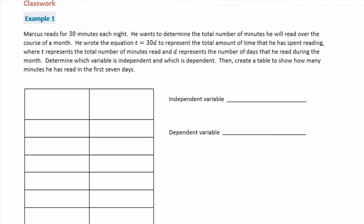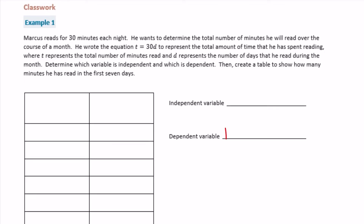First, let's talk about the difference between an independent variable and a dependent variable. The independent variable can change, and when it does, it affects the dependent variable. The dependent depends on the independent variable. I feel like it's easier to give examples than give the definitions. So if he reads 30 minutes every night, the total minutes read would be the dependent variable, because the total number of minutes read in 4, 5, 6, 7 days depends on the independent variable, and the independent variable would be the number of days.